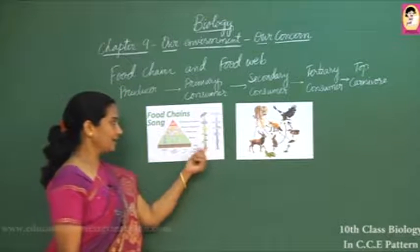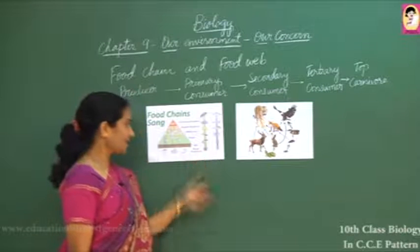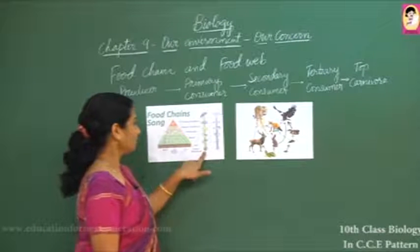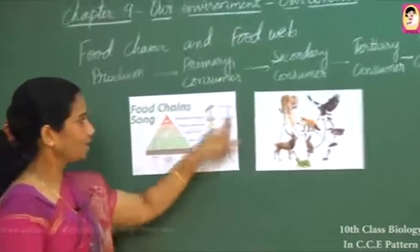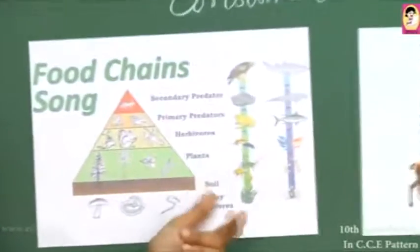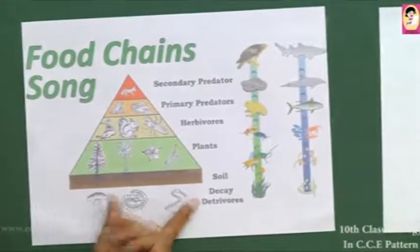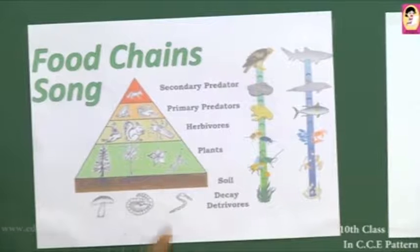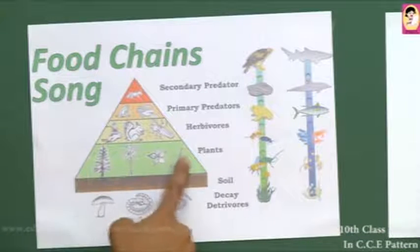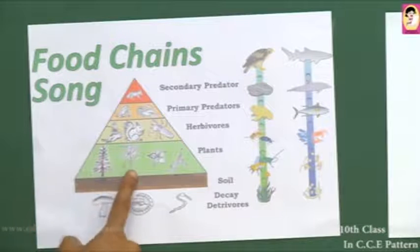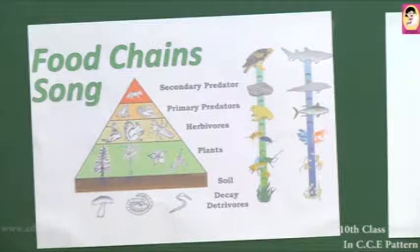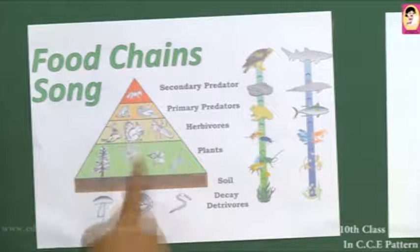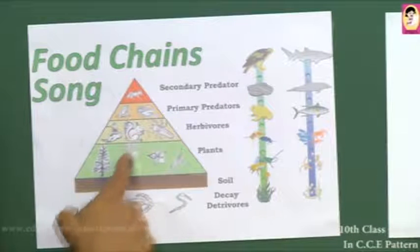Now let us look at terrestrial and aquatic food chains. In the terrestrial food chain, decomposers — such as mushrooms, fungi, bacteria, and soil-living creatures — break down matter and return nutrients to the soil. Producers are plants that trap sunlight, perform photosynthesis, and prepare food for themselves and other organisms. Herbivores are the next level, depending on plants for food.